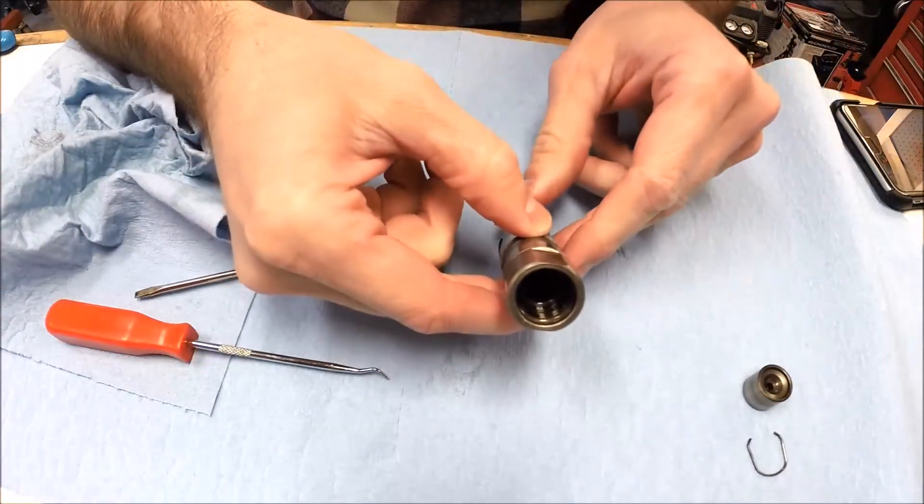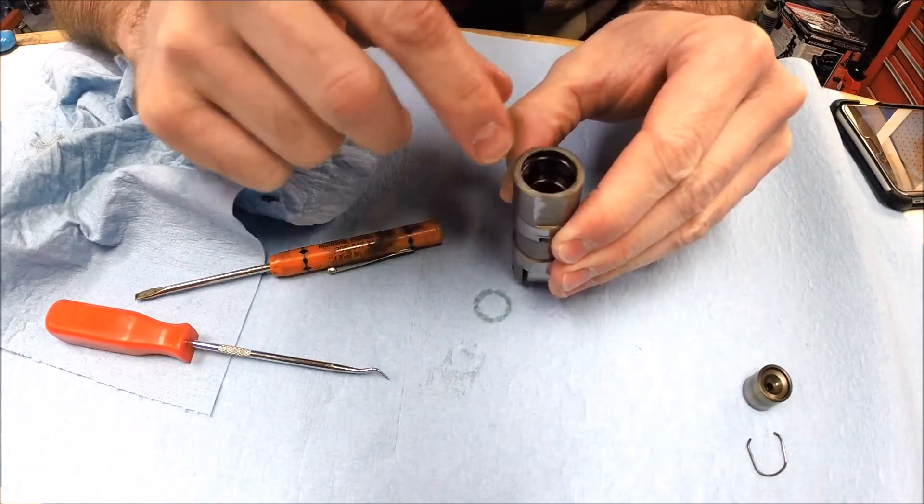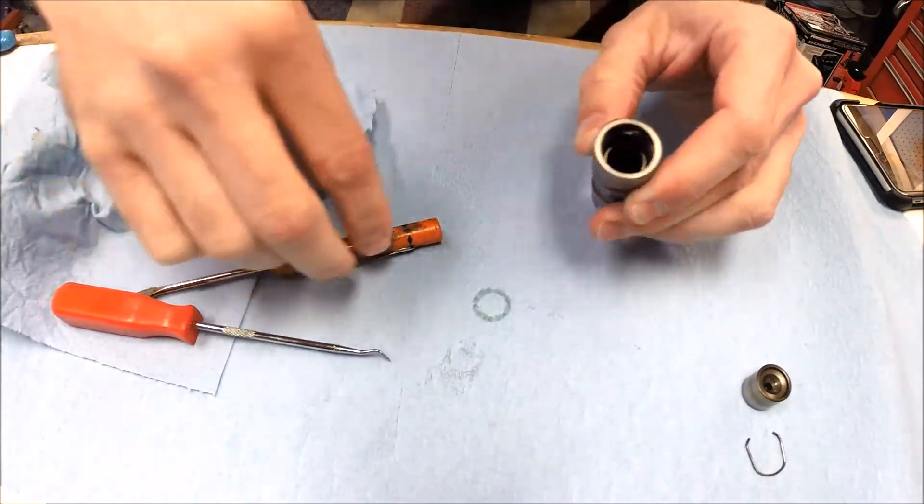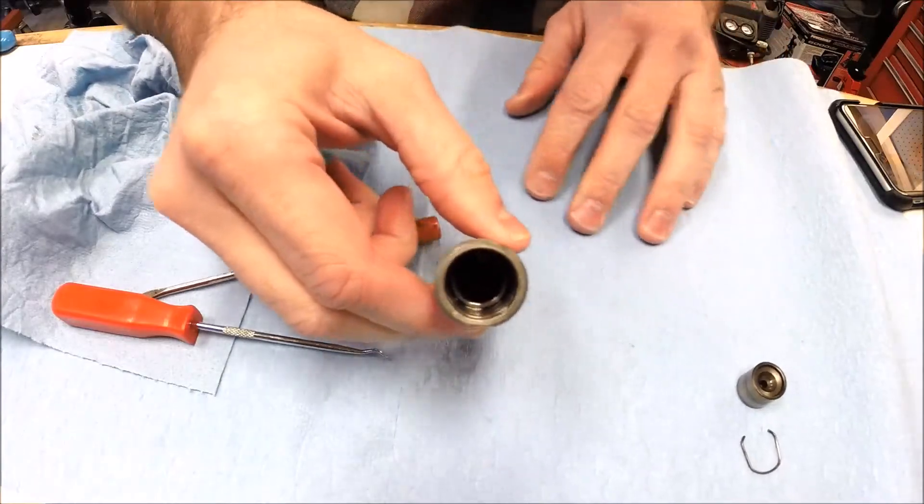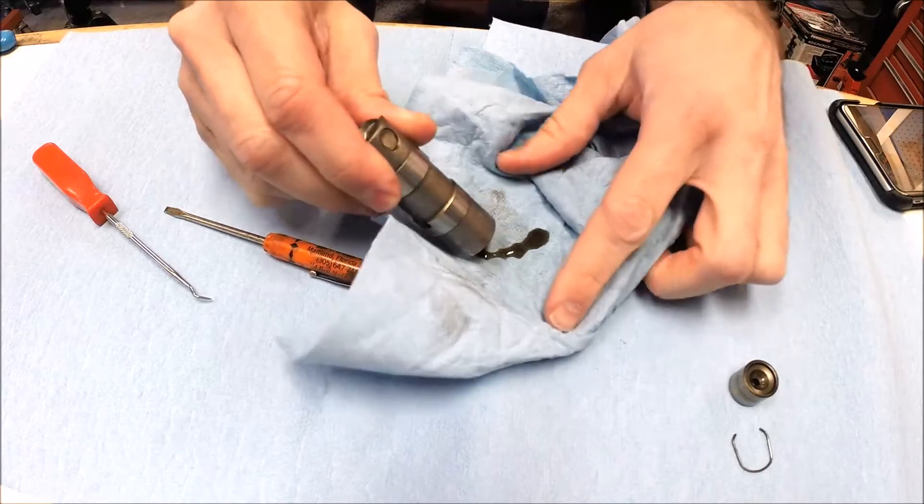Then down in here, I'm sure you can't see in there very well, there's another plunger that also has a spring under it. This will have oil build up in it. So take a moment to drain out some of the oil.